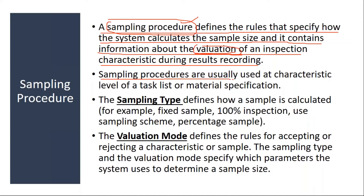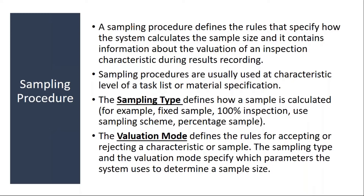Normally, sampling procedures are usually used at the characteristic level of a task list or material specification. These sampling procedures are ultimately assigned to a characteristic in the task list, in the inspection plan — we will cover that when we go to inspection plan. Basically, sampling procedure will contain two things: one is sampling type and another one is valuation mode.